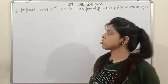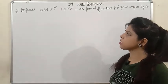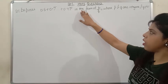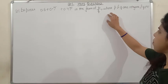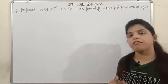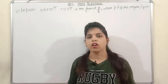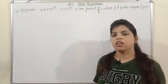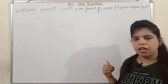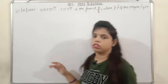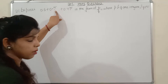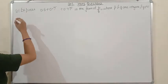Let's start Question 1: Express 0.6 + 0.7̄ + 0.47̄ in the form p/q where p and q are integers and q ≠ 0. These types of questions are very important from the examination point of view — definitely one such question will come in the exam. This is a question from NCERT Exemplar. The digit 7 is repeating infinitely, so let us see how to solve this.